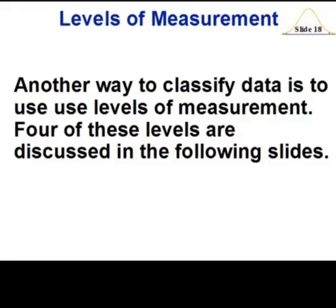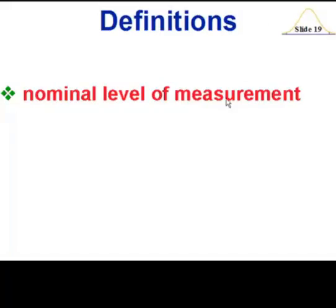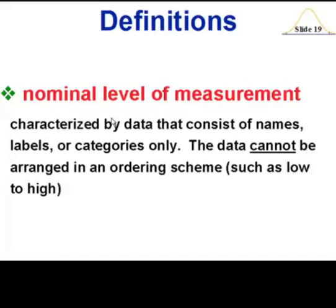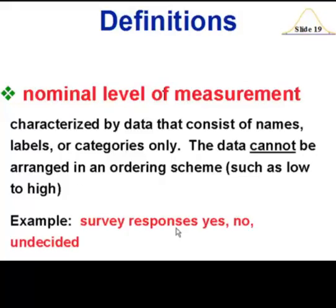The levels of measurement are a way of classifying data. We have a nominal level of measurement — that is data that only consists of names and labels of categories, and the data cannot be arranged in any ordered scheme, such as low to high. If you were to respond to a survey with yes, no, or undecided, the order here really doesn't matter.